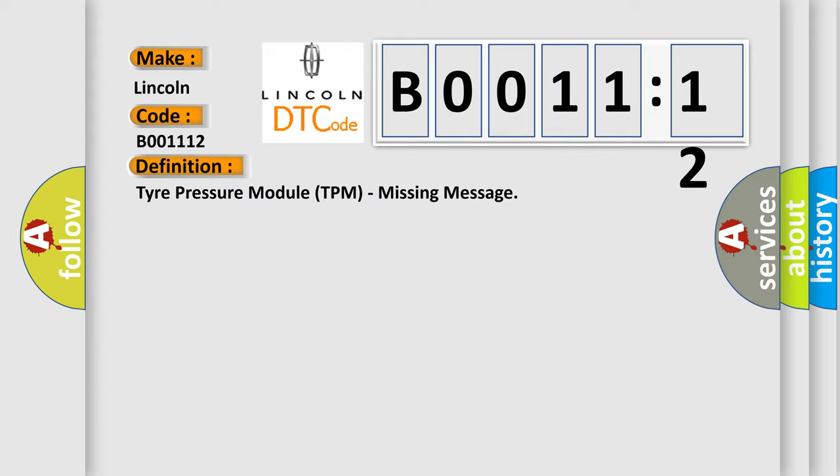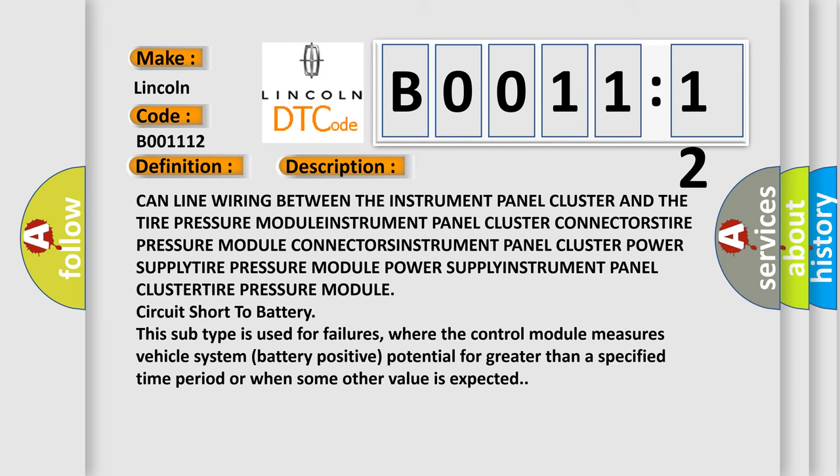And now this is a short description of this DTC code. CAN line wiring between the instrument panel cluster and the tire pressure module, instrument panel cluster connectors, tire pressure module connectors, instrument panel cluster power supply, tire pressure module power supply, instrument panel cluster tire pressure module. Circuit short to battery. This subtype is used for failures where the control module measures vehicle system battery positive potential for greater than a specified time period or when some other value is expected.